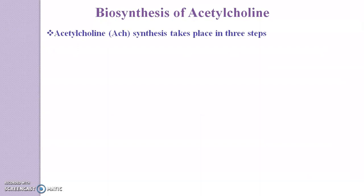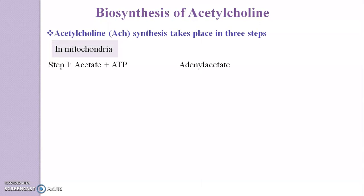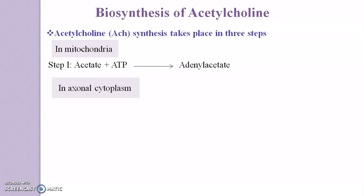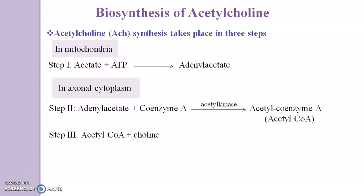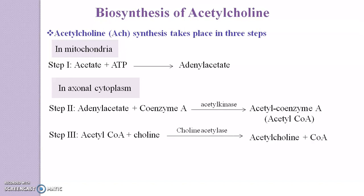Acetylcholine synthesis takes place mainly in three steps. The first step takes place in the mitochondria, where acetate reacts with ATP and forms adenyl acetate. The further two steps take place in the axonal cytoplasm. In the second step, the formed adenyl acetate reacts with coenzyme A in the presence of acetyl kinase and gives acetyl coenzyme A. In the third step, this acetyl coenzyme A reacts with choline in the presence of choline acetylase and forms acetylcholine along with CoA.